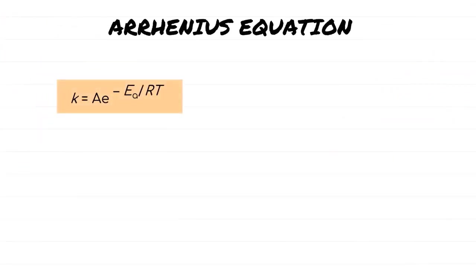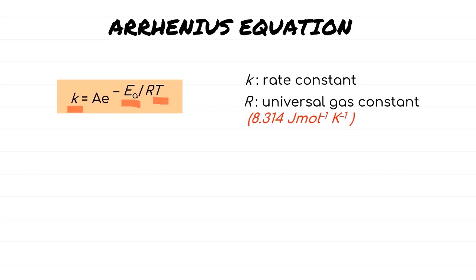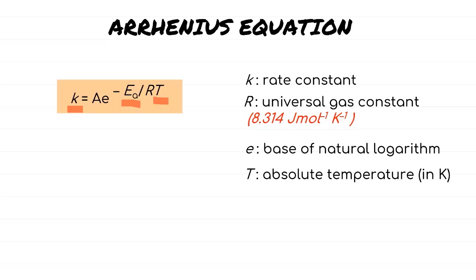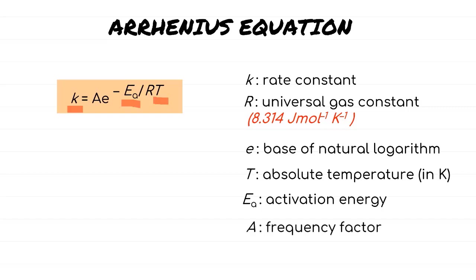The Arrhenius equation is used to explain the relationship between rate constants, activation energy, and temperature. This equation consists of the rate constant k, the universal gas constant R of 8.314 J per mole per K, e as the base of natural logarithm, T as absolute temperature in Kelvin, Ea as the activation energy, and A as the frequency factor. There are two ways to determine rate constants, activation energy, temperature, and frequency factor from the Arrhenius equation.